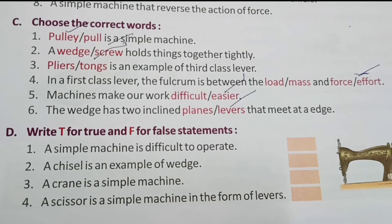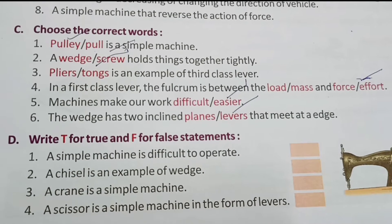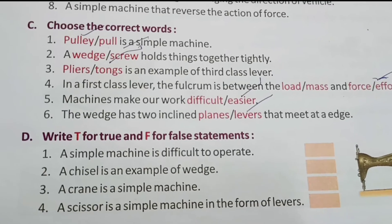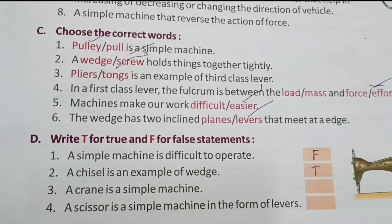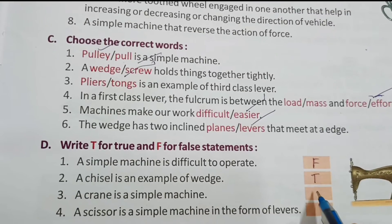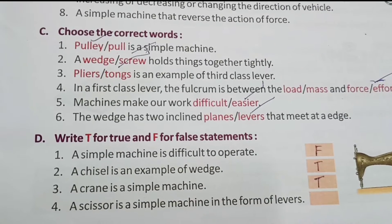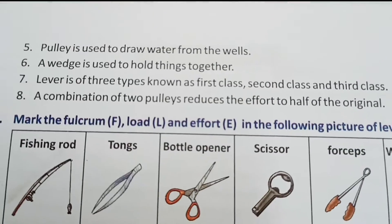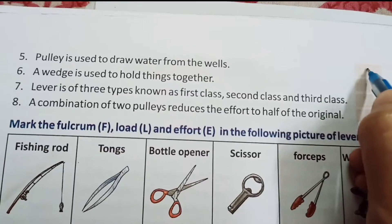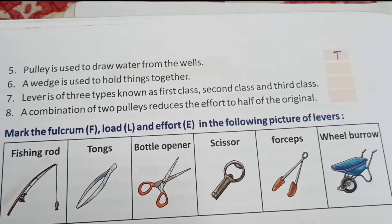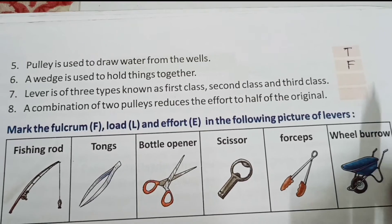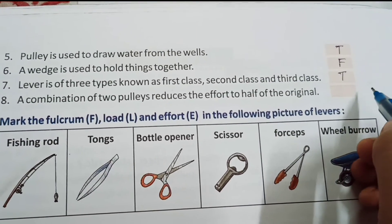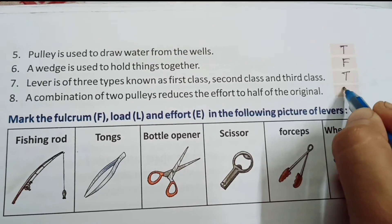True or False. A simple machine is difficult to operate — false. A chisel is an example of wedge — true. A crane is a simple machine — true. A scissor is a simple machine in the form of levers — true. A pulley is used to draw water from the well — true. A wedge is used to hold things together — false. A lever is of three types known as first class, second class, third class — true. A combination of two pulleys reduces the effort to half of the original — true.